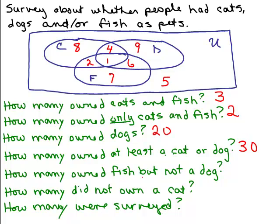How many owned fish but not a dog? We look at the fish circle, but we don't want to include the people in the intersection that also have dogs — that's 7 people we exclude. So we only count the 2 and the 7... these people had fish but did not own a dog. Those 9 people had fish but not a dog, so we have 9.